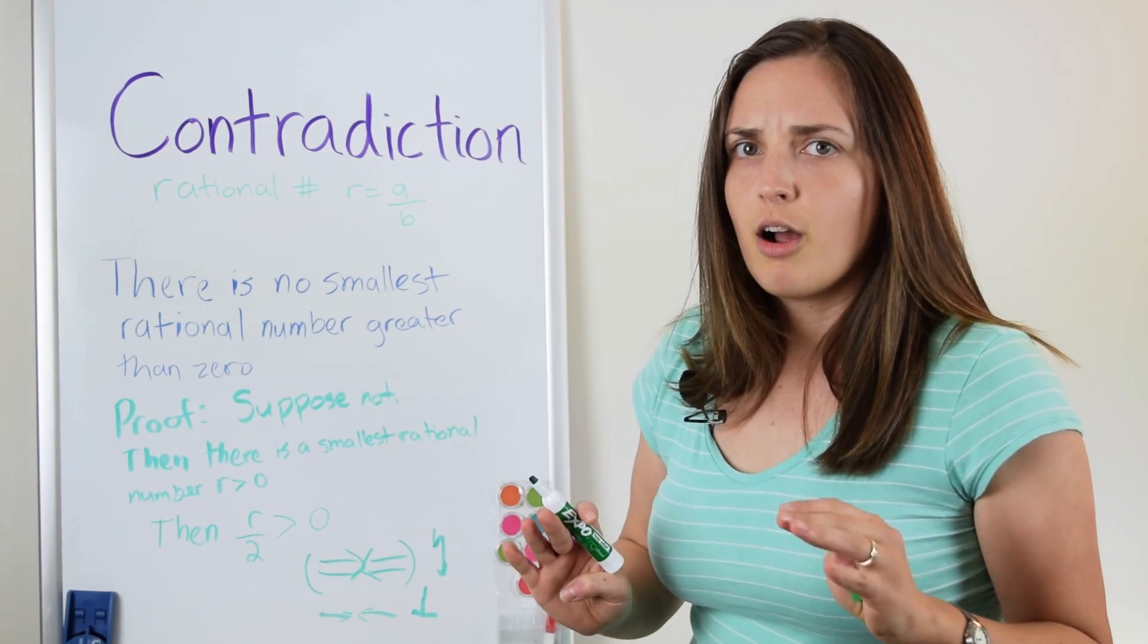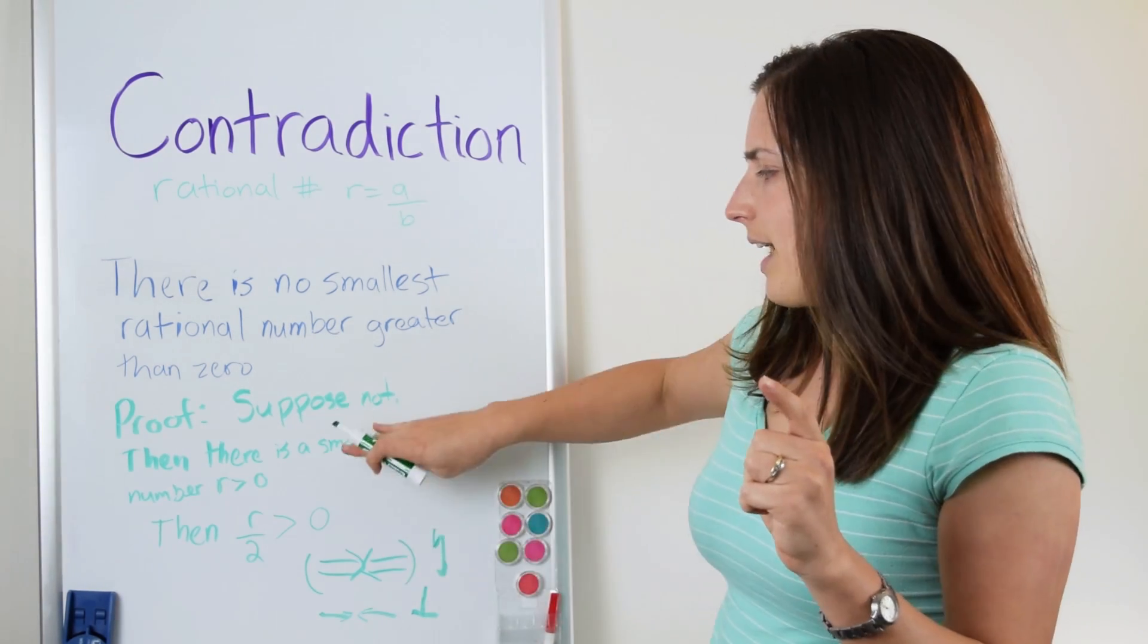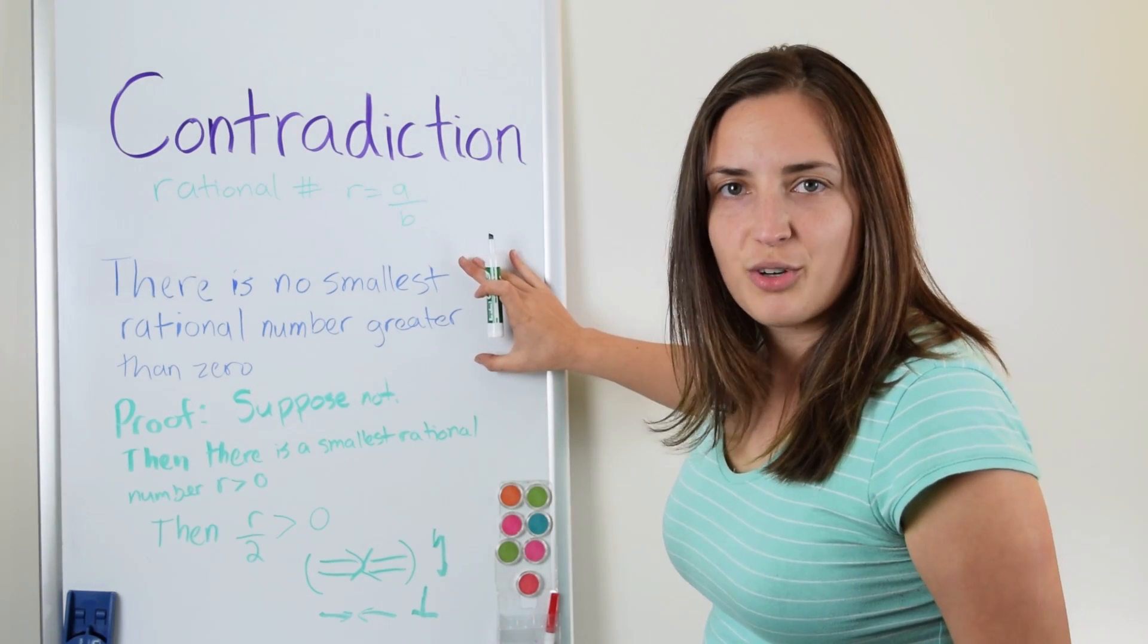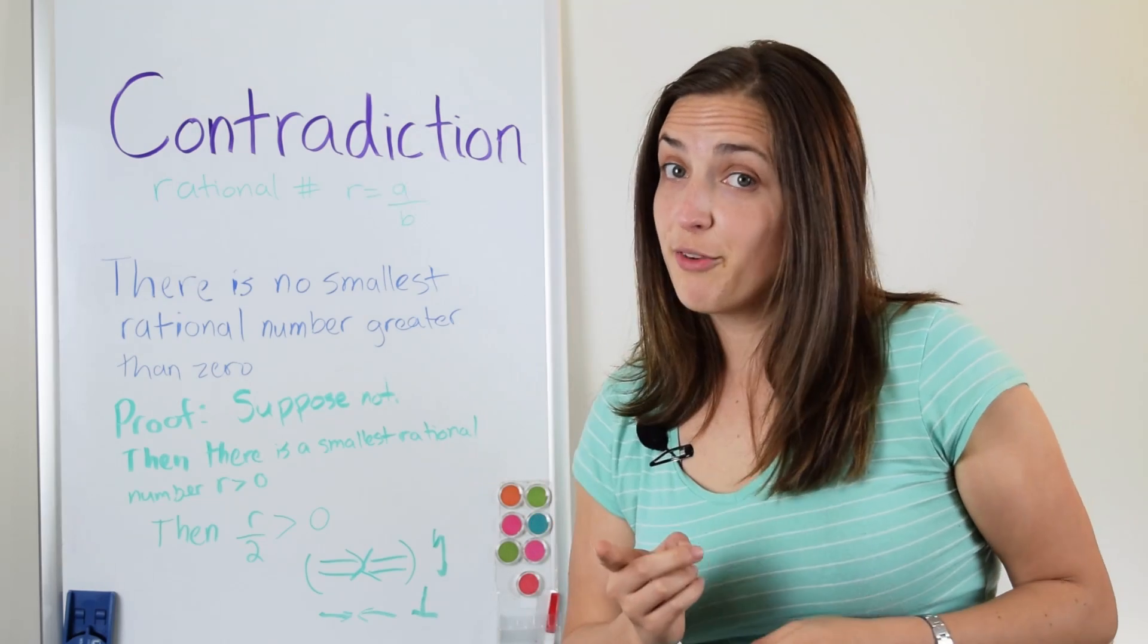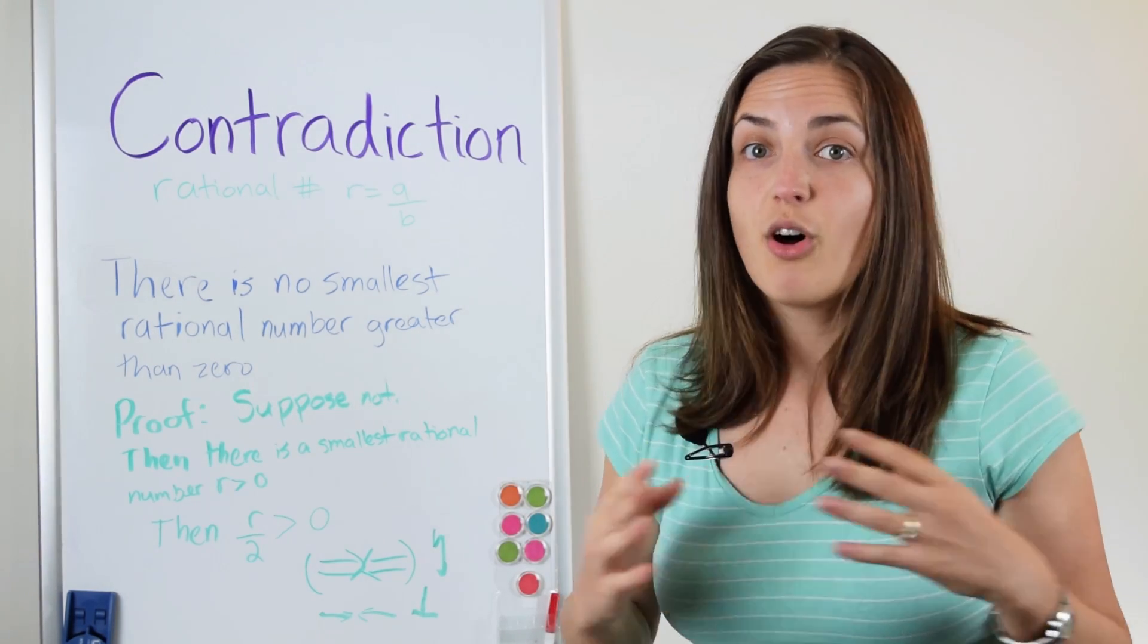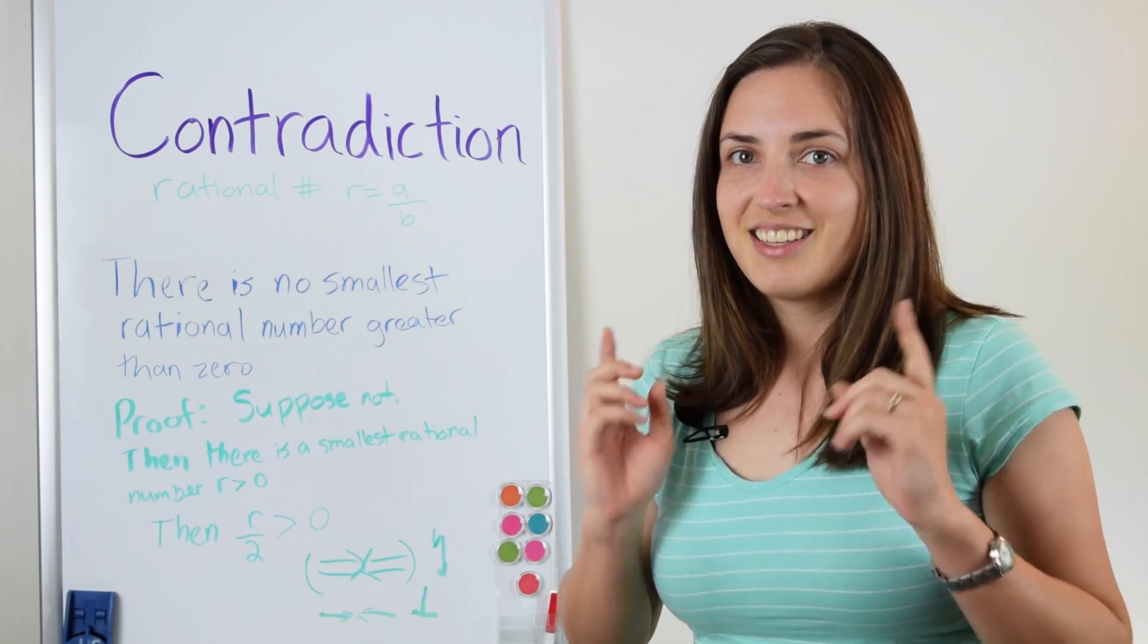So something must have gone wrong. I must have lied to you when I said that it's not true. In other words, it is true. So don't be afraid of contradiction. In mathematics it's an essential tool which we use all the time to prove many things. See you next time!